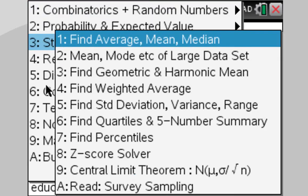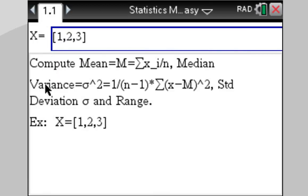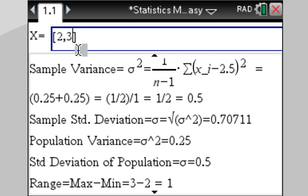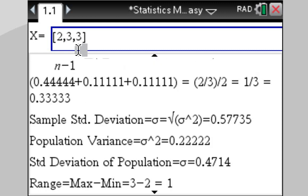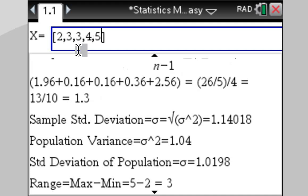We're going to go to Statistics. Find average mean median. And just enter the values: 2, 3, 3, 4, 5.